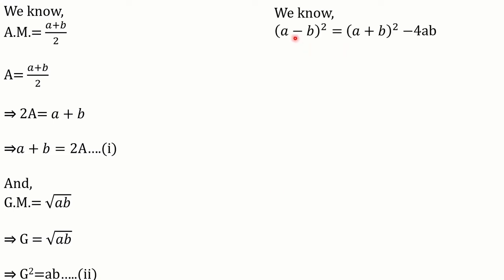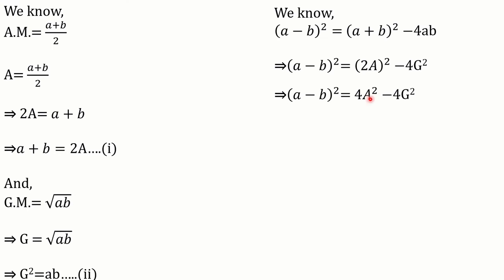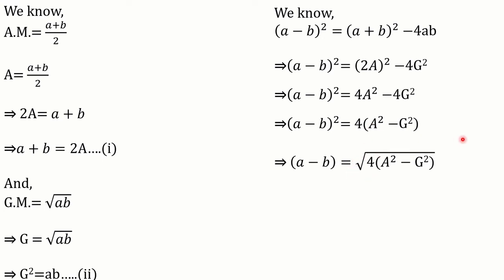Now, we know (a - b)² = (a + b)² - 4ab. Let's substitute the value of (a + b) from equation 1 and ab from equation 2. In place of (a + b) we keep 2A, and in place of ab we keep G². So (2A)² = 4A². Taking 4 common from both terms, we get (a - b)² = 4(A² - G²). Sending the square to the other side gives a - b = 2√(A² - G²), which is equation 3.